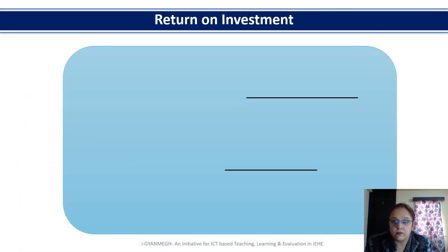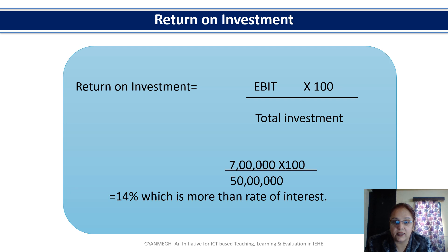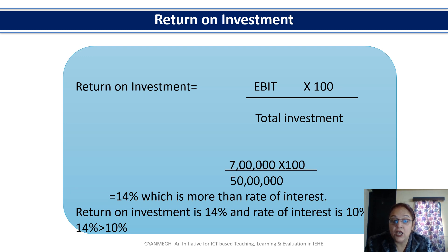Now let us understand return on investment and its role in capital structure decisions. EBIT is 7 lakhs and total capital employed is 50 lakhs. So return on investment = 7 lakhs divided by 50 lakhs multiplied by 100 = 14%. Since 14% ROI is greater than the 10% interest paid to debenture holders, including more debt is beneficial. If ROI were only 5% or 6% and you had to pay 10% interest, that would not be a good situation.